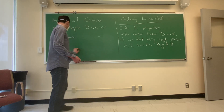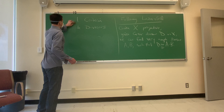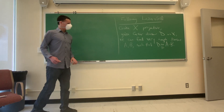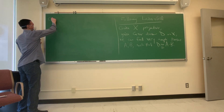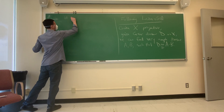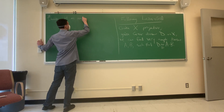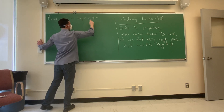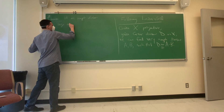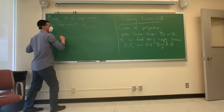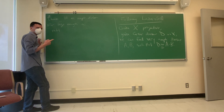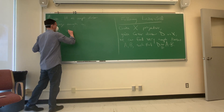This is an extremely useful technical result. Let me show you how to prove it — this is where the geometric characterization of ampleness is very useful. The idea is to choose H, an ample divisor. Then for large enough m, m times H will be very ample.